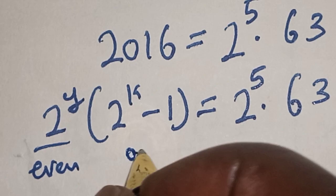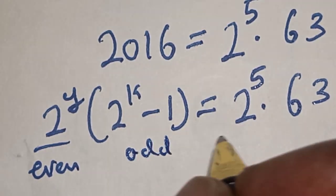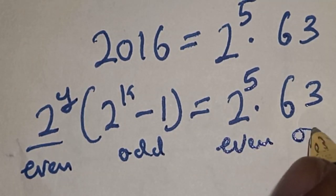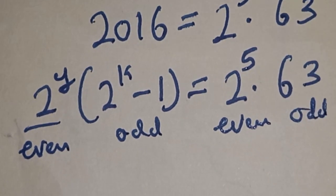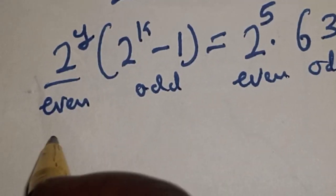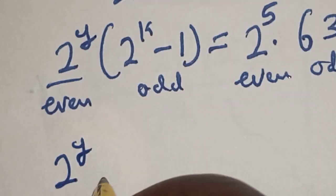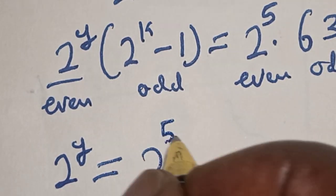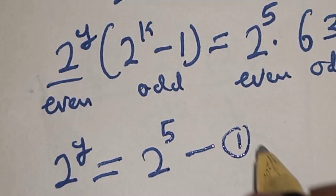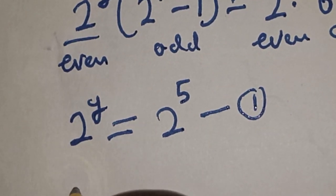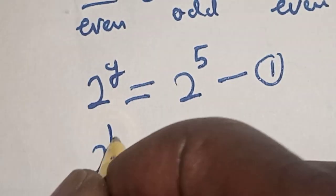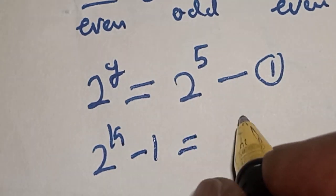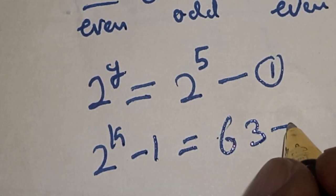If we check: 2 raised to power Y is even, 2 raised to power 5 is even, (2 raised to power K minus 1) is odd, and 63 is odd. Comparing the even and odd parts on both sides, we set up two equations: equation 1 is 2 raised to power Y equals 2 raised to power 5, and equation 2 is 2 raised to power K minus 1 equals 63.